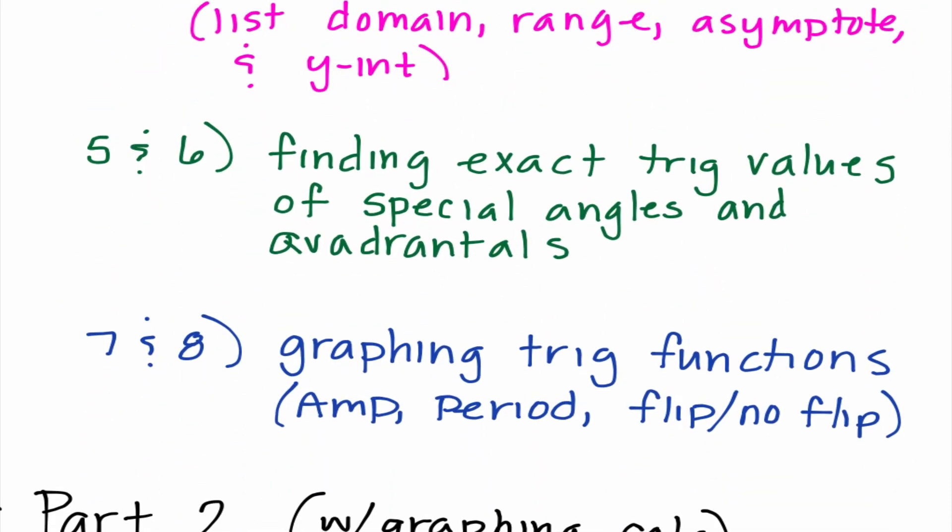The last four problems on the free response all correspond with chapter four. Five and six, it's going to ask you to find exact trig values of special angles and of quadrantals. This is probably the one you need to study a little bit more. It's going to give you a chart and ask you to find sine of theta, cosine theta, tan theta, cotan theta, secant theta, cosecant theta. It'll say something like theta equals 210 degrees or theta equals pi over two, and we would need to know how to find all those values. Seven and eight deal with graphing trig functions. You'll have to list the amplitude, the period, and tell me if it's a flip or no flip.